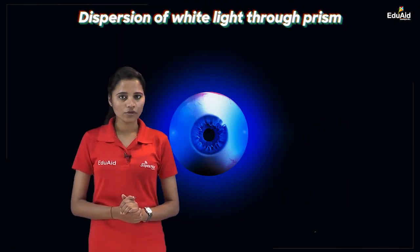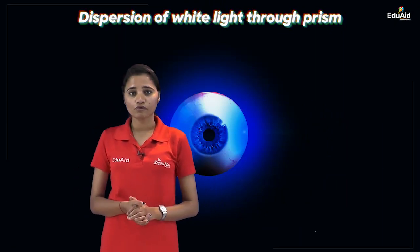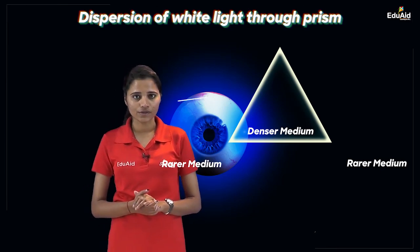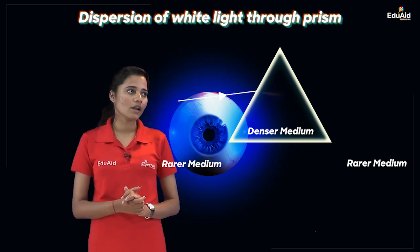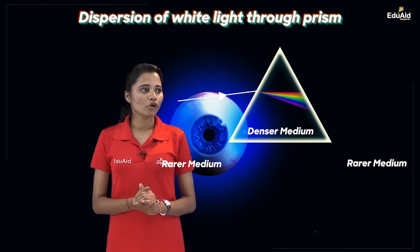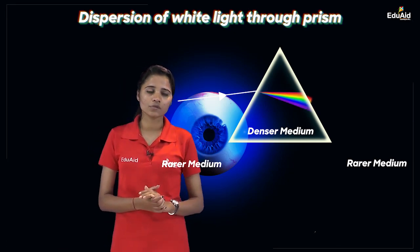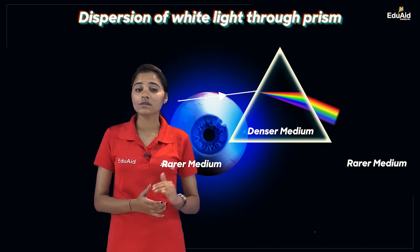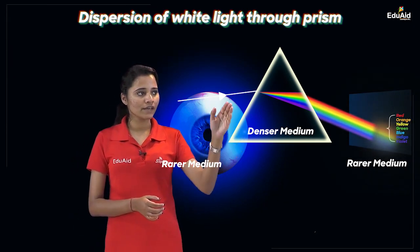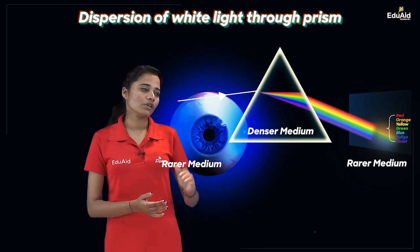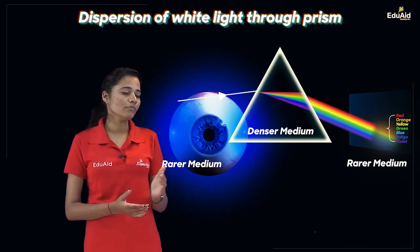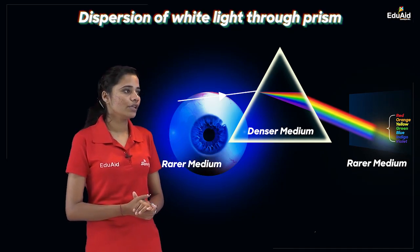Let us try to understand what actually happens inside a prism because of which white light gets split into seven components. We take a glass prism and allow a beam of white light to be incident on it. The white light is travelling from a rarer medium to a denser medium, so it will bend inside the prism towards the normal. After undergoing refraction at the surfaces, all seven colours emerge and fall on the screen — violet, indigo, blue, green, yellow, orange, red.